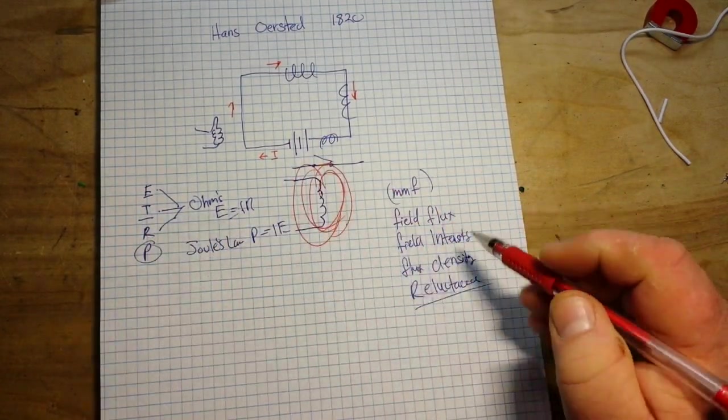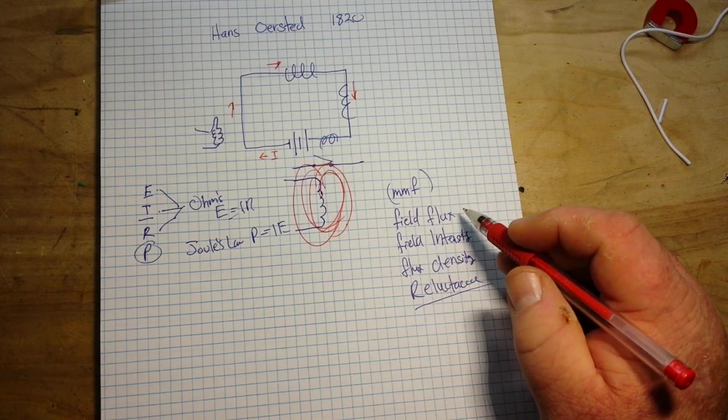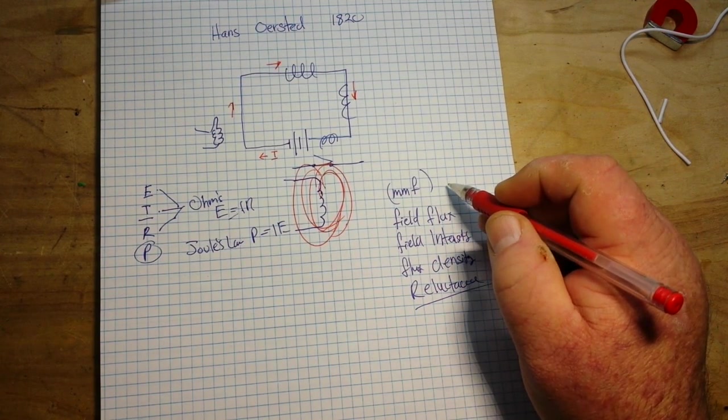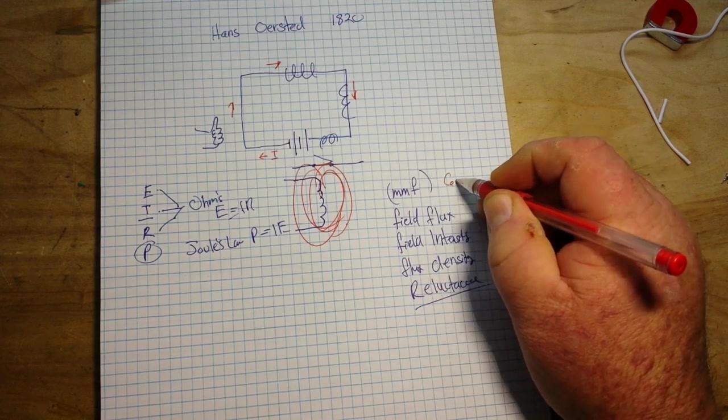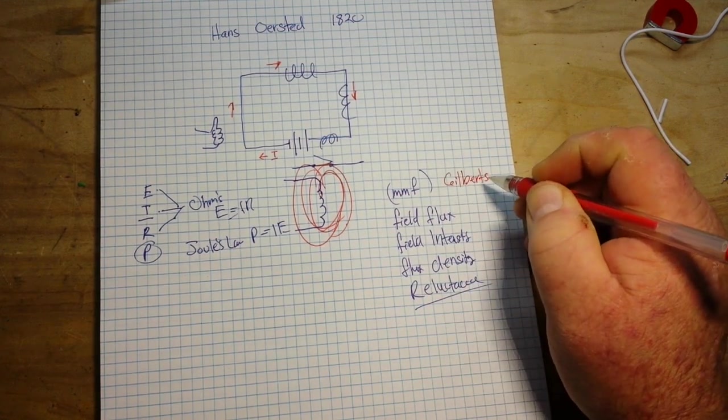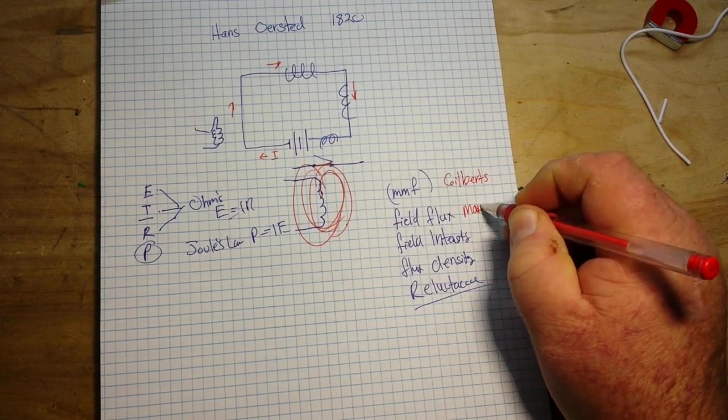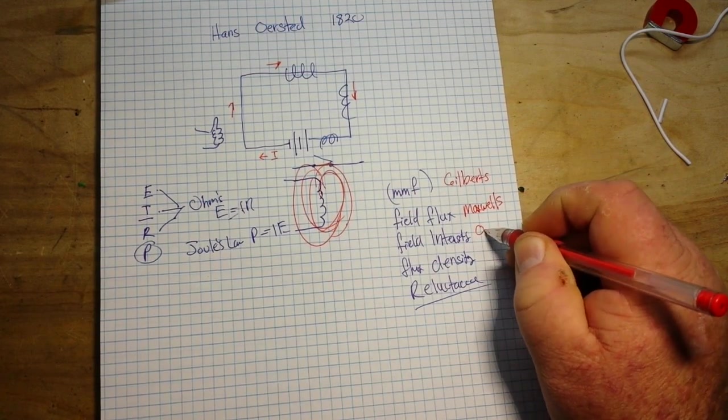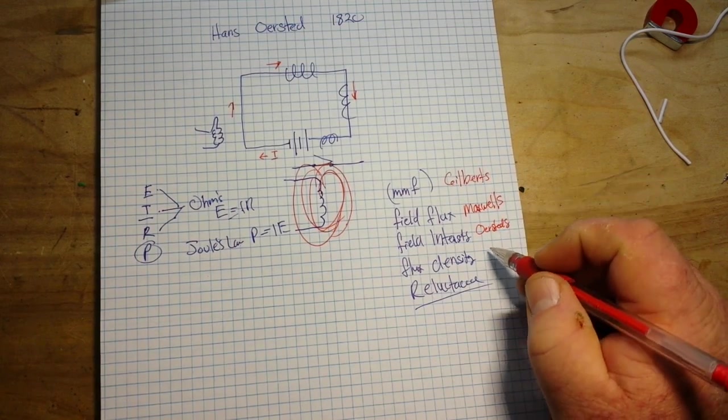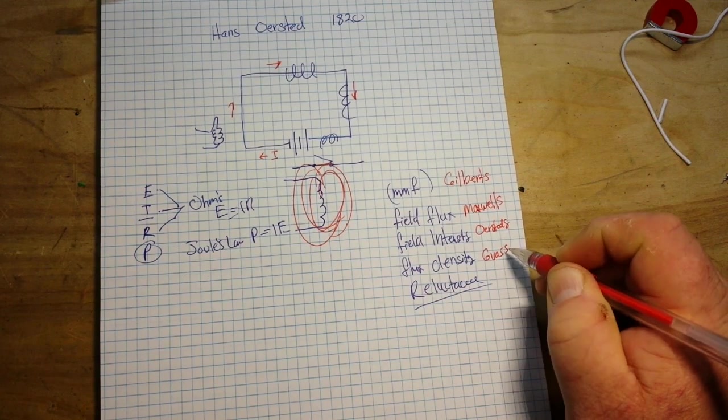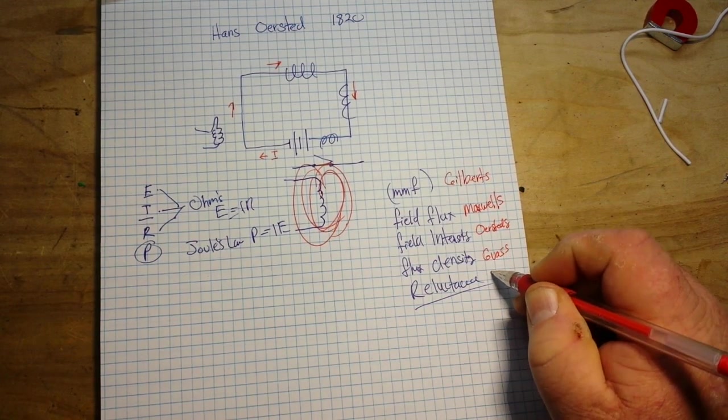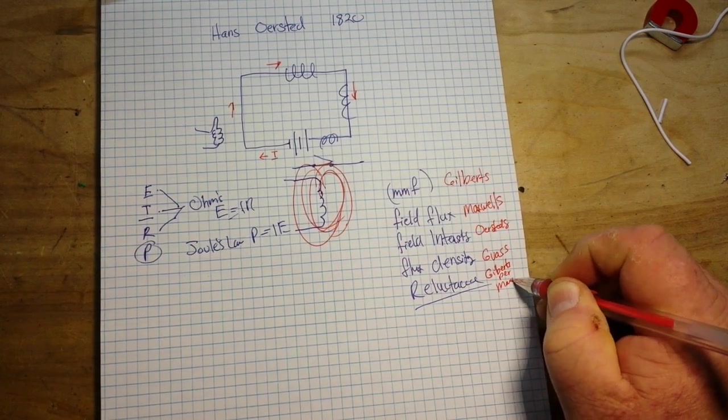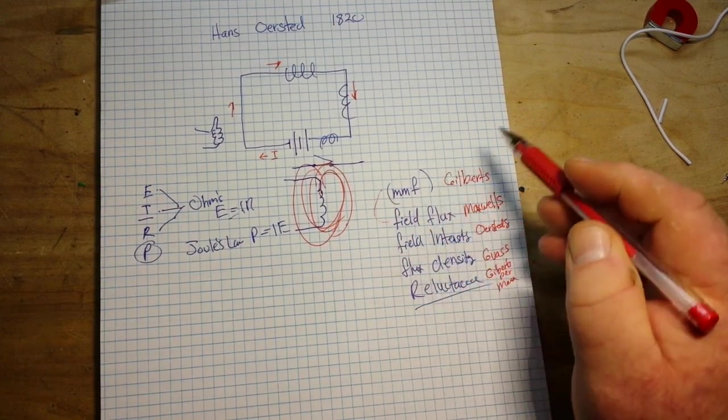So we have our E, I, R, and P, and if we come over to our magnetic side of the thing. Let's talk field force, our magnetomotive force—that is measured in gilberts. Then our field flux is of course measured in maxwells. Our field intensity is measured in oersteds, our flux density is gauss, and our reluctance is gilberts per maxwell. So you see there how they're starting to relate to each other.